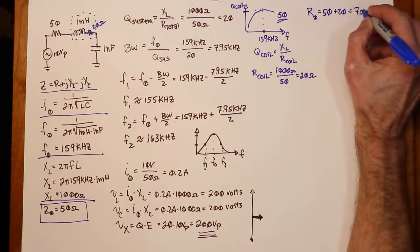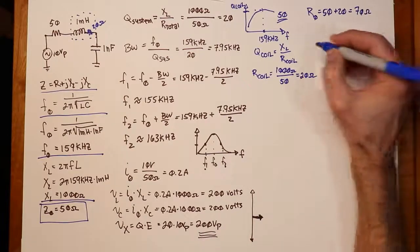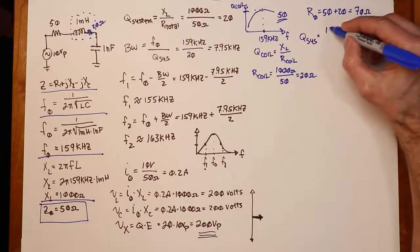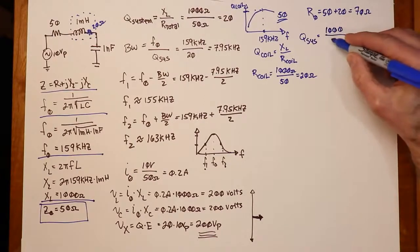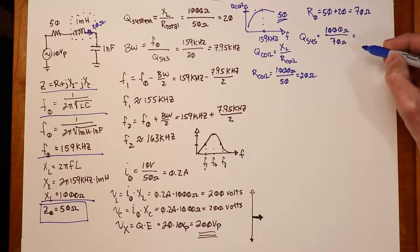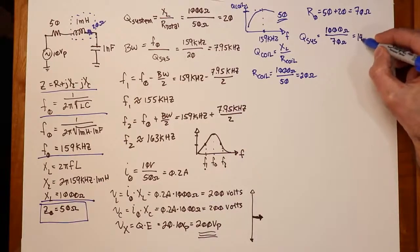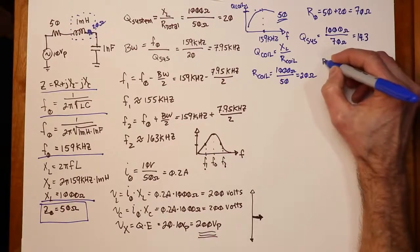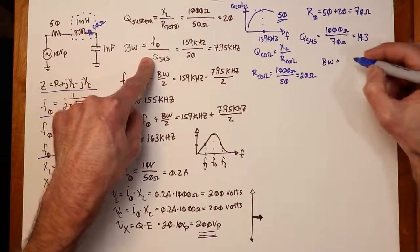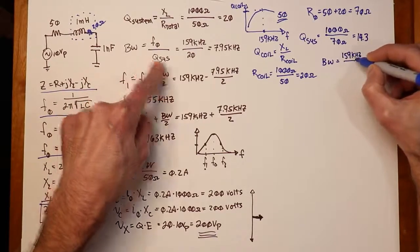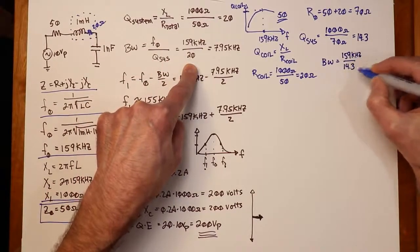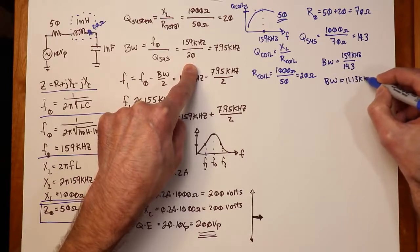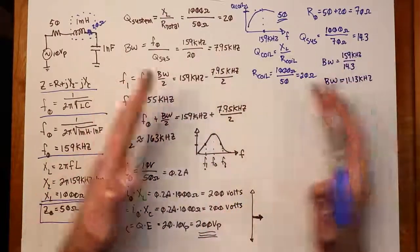With 70 ohms total resistance, the new system Q = X_L / R_total = 1000 / 70 = 14.3. This drops Q from 20 down to 14.3. The bandwidth is now 159 kHz / 14.3 = 11.13 kilohertz, broadened from the original 7.95 kHz. So f₁ and f₂ values are going to spread out.